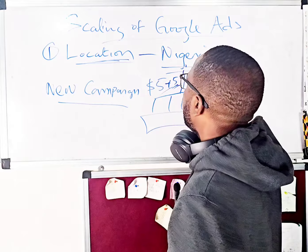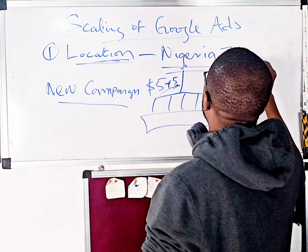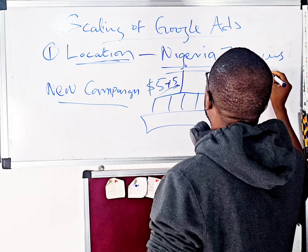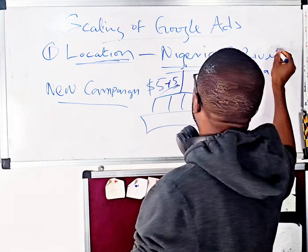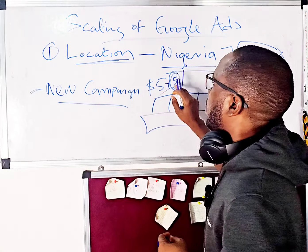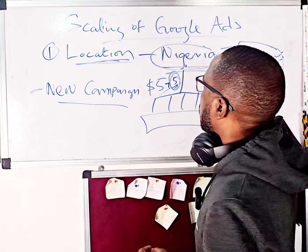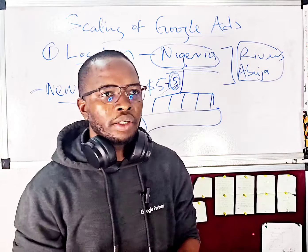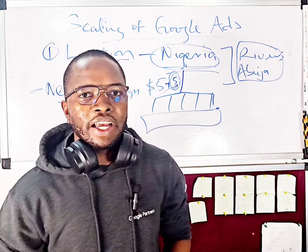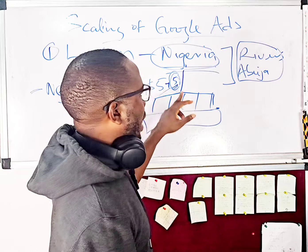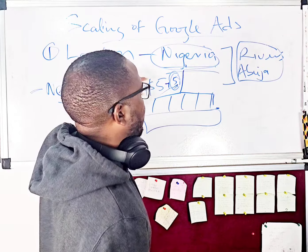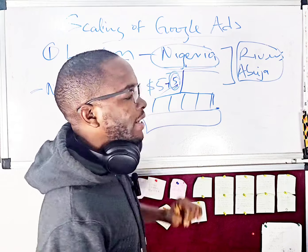Create a new campaign targeting the best-performing states — in this case, Rivers State and Abuja. By creating a new campaign targeting these two places, you can allocate the extra five dollars specifically to that new campaign. So instead of adding the five dollars to the first campaign targeting the whole country, you create a new campaign for the two locations giving you the best results.